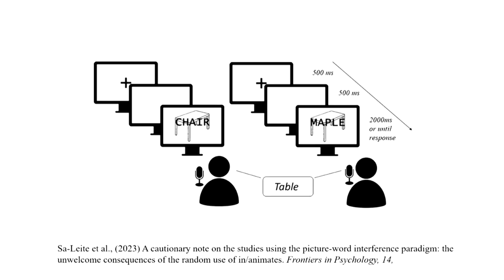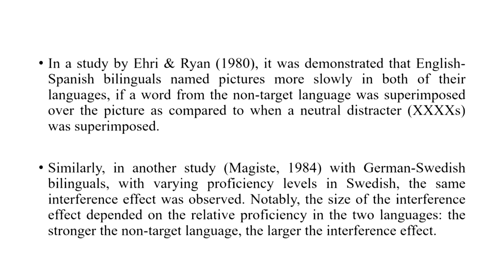This gets even more tricky when talking about bilinguals, because the word 'chair' could be semantically related to 'table' in English, but we could also use a word semantically related to 'table' in another language — say its translational equivalent in Dutch or Hindi. In a study by Aery and Ryan in 1980, it was demonstrated that English-Spanish bilinguals actually named pictures more slowly in both of their languages if a word from the non-target language was imposed over the picture, compared to when a neutral distractor was imposed. This basically means that some activation from the non-target language is capable of interfering with picture naming times in the target language.